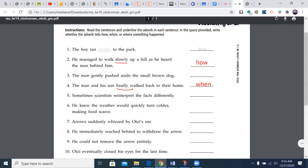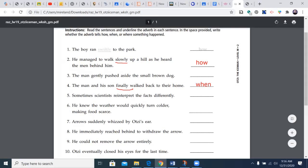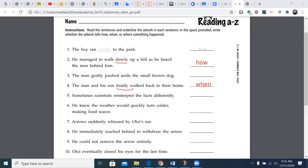'The man gently pushed aside the small brown dog.' Now there are a couple descriptive words here. Small and brown describe the dog, but the dog is a noun. That means these two are adjectives because adjectives describe the noun. The verb is pushed. How was it pushed? Gently. So gently will tell you how.